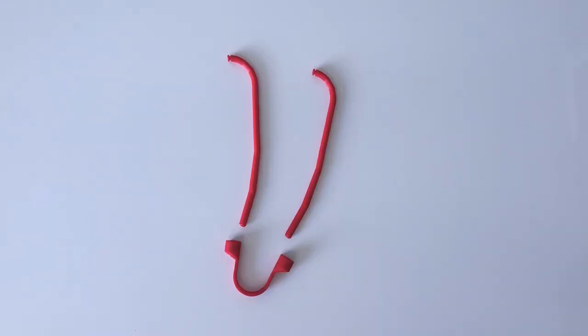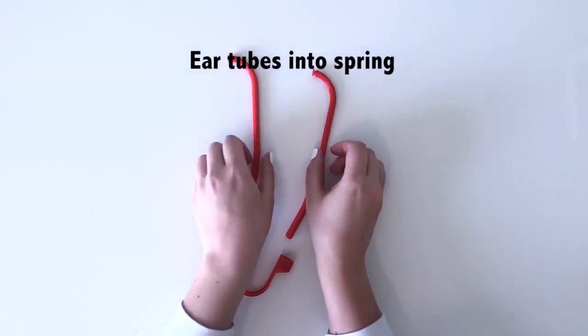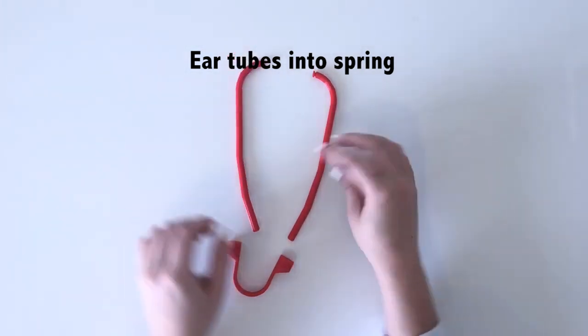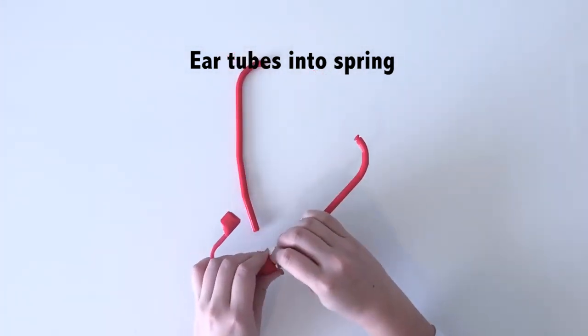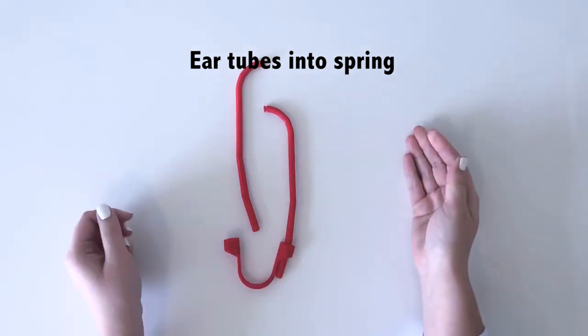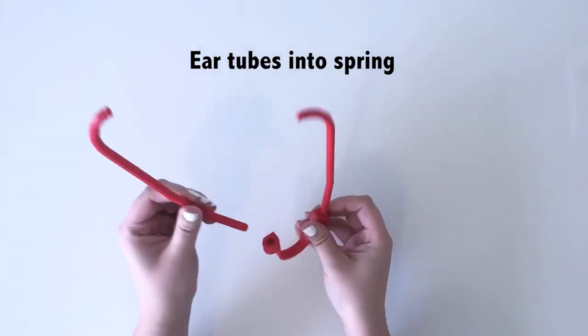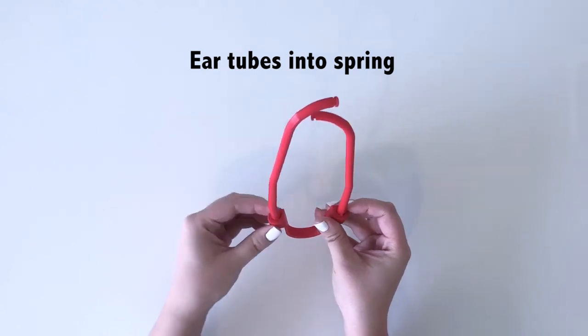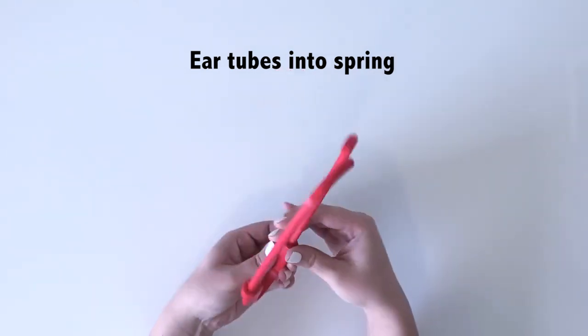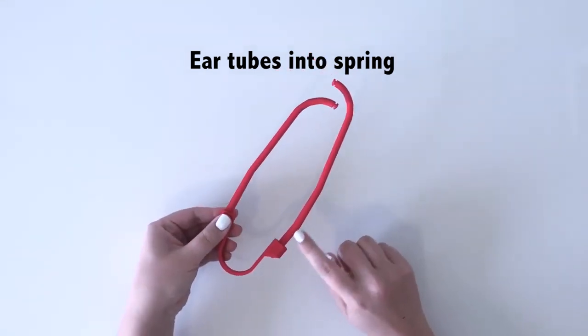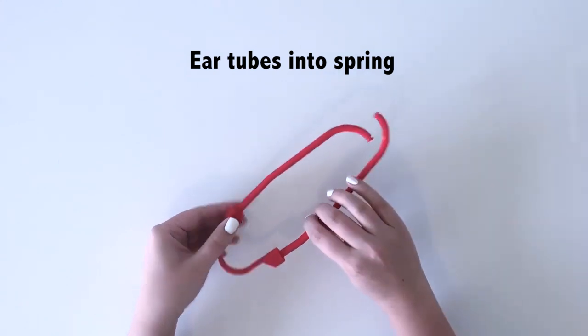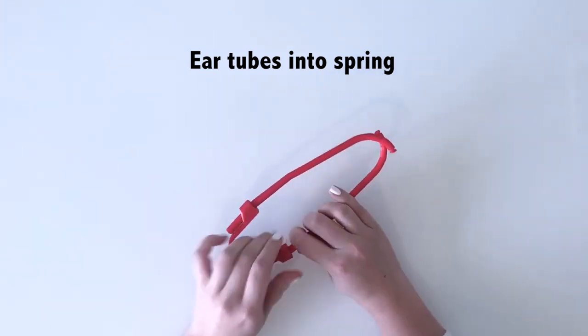Now we will start with assembly. With the curved ends of the ear tubes facing in, push the ear tubes into the spring. If you're having difficulty, check that the ear tube is properly aligned with the spring opening as they both have an oval shape. You may notice a small bump on the inside of the ear tubes. That marks how far they should be inserted into the spring.